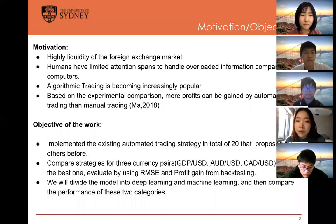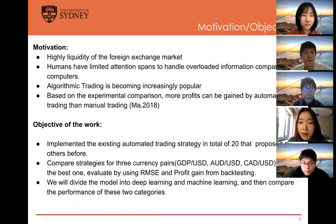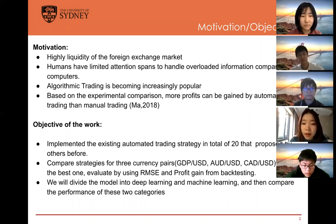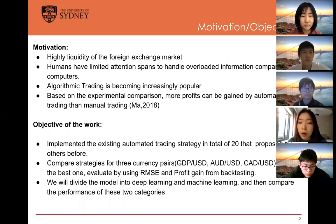Our motivation is from four perspectives. Firstly, the high liquidity of the foreign exchange market. Humans have a limited attention span to handle overloaded information compared to computers. Algorithmic trading is becoming increasingly popular. And lastly, based on experimental comparison, more profits can be gained by automatic trading than manual trading.